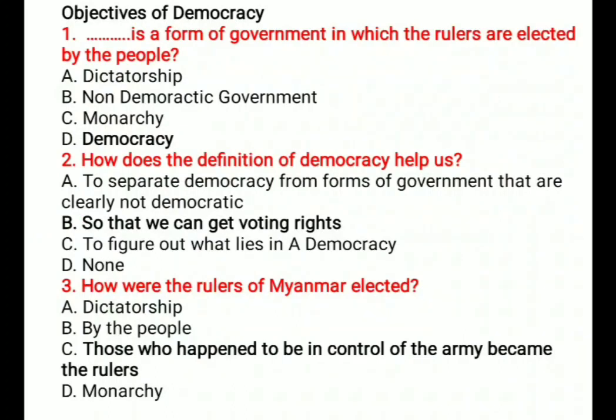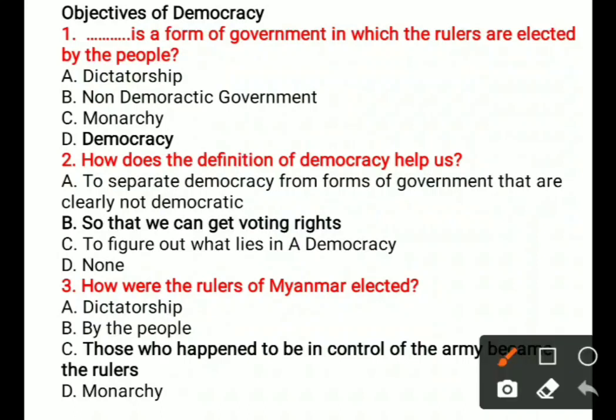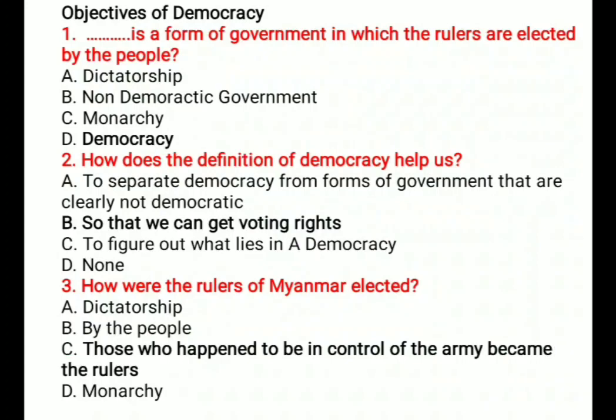Question 3: How were the rulers of Myanmar elected? Options are: A) Dictatorship, B) By the people, C) Those who happen to be in control of the army became the rulers, D) Monarchy. The correct option is C.